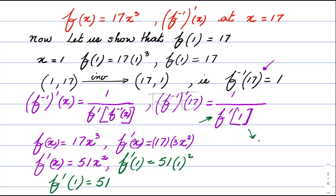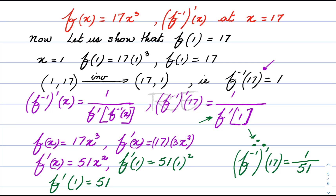Therefore, the derivative of the inverse of f of 17, according to the formula, will be equal to 1 over 51.